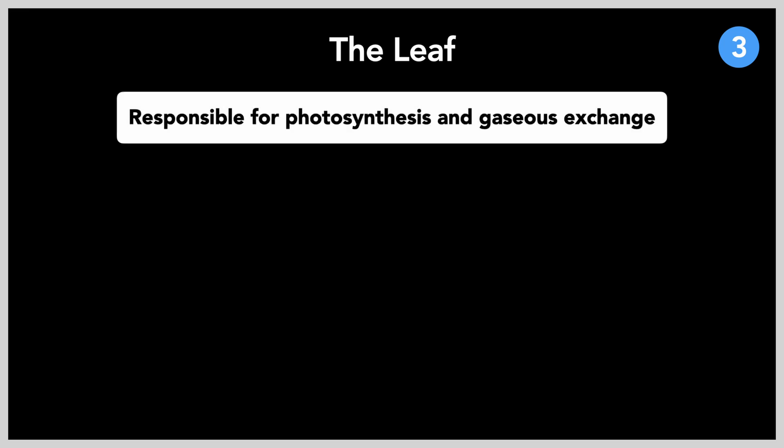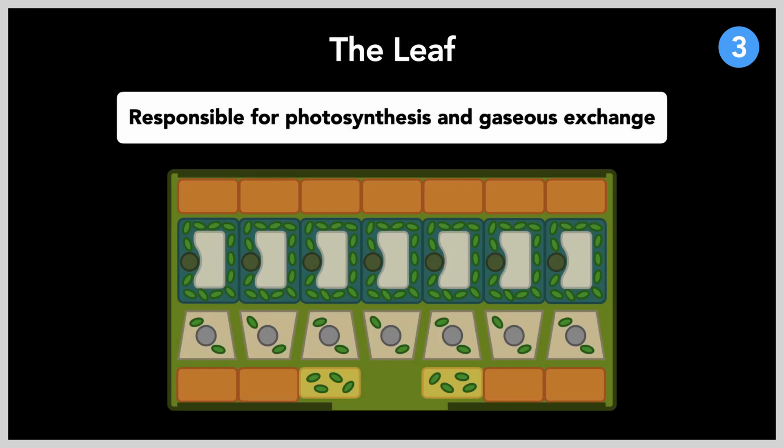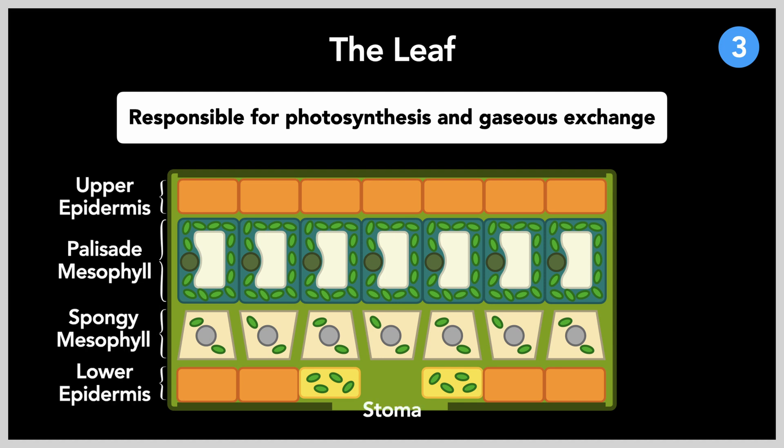Photosynthesis and gaseous exchange are both crucial plant functions, and are both facilitated by the leaves. These leaves are made up of different layers of cells, each with different functions, as you can see labeled here. For this video, we will be narrowing our selection to these two layers, the palisade and spongy mesophyll.